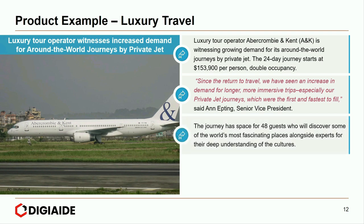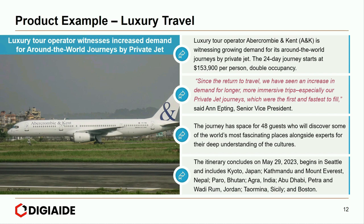The journey has space for 48 guests who will discover some of the world's most fascinating places alongside experts for a deep understanding of cultures. The itinerary concludes on May 29, 2023, beginning in Seattle and includes Kyoto Japan, Kathmandu, Mount Everest, Paro in Bhutan, Agra in India, Abu Dhabi, Petra and Wadi Rum in Jordan, and other destinations.